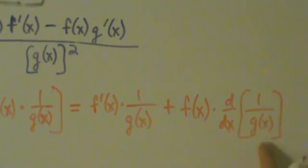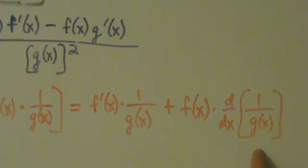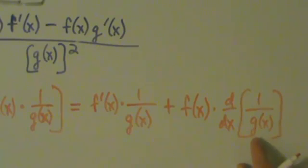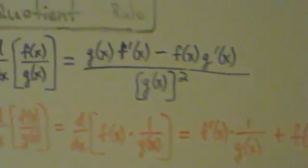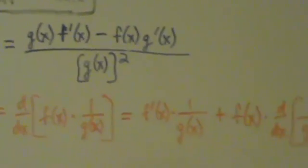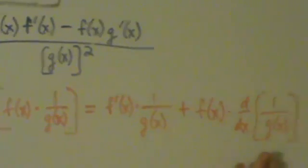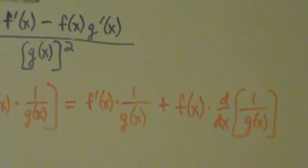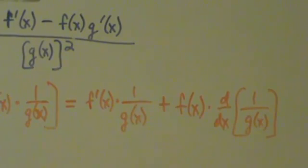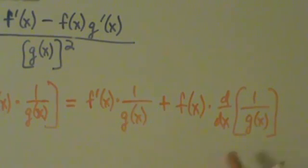Now the question is: what is d/dx of 1/g(x)? This is where the chain rule comes into play. You might look at 1/g(x) and think to use the quotient rule, but we don't want to do that — we're proving the quotient rule, so we're not allowed to use it. We can use the chain rule though, and that's fine.